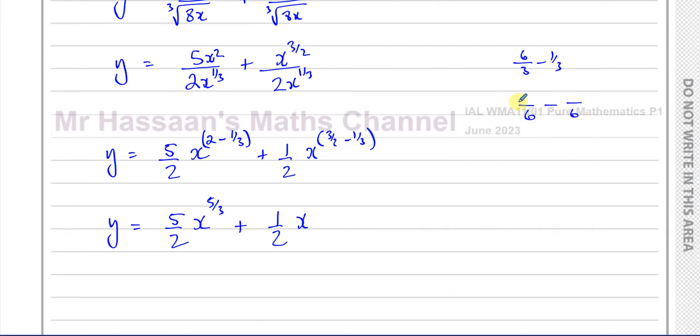Here we can make them both over 6. 3 over 2 is like 9 over 6, multiply by 3, and 1 third is like 2 over 6, that's going to give you to the power of 7 over 6.